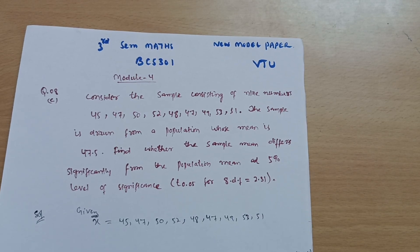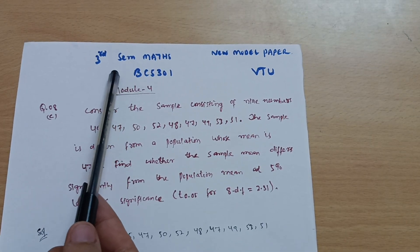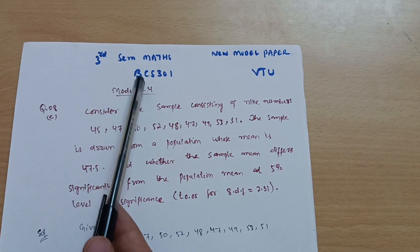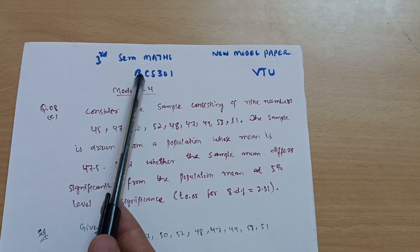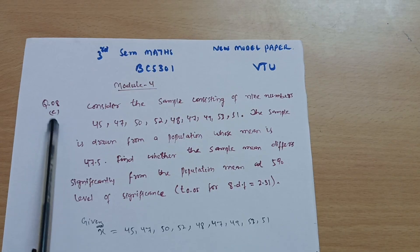Dear friends, welcome back again into another lecture. So we are discussing the new model question paper for the mathematics subject third semester, CSE stream students and allied branches. Subject code is BCS301. This is the last question of module 4, question number 8C.